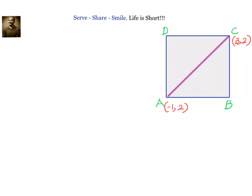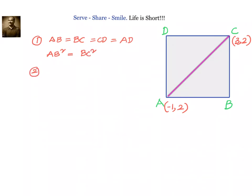First, let's write down the properties of a square so we can apply coordinate geometry concepts to find the two opposite vertices B and D. In a square, all sides are equal: AB = BC = CD = AD. If we square them, they are all equal, so AB² = BC². Second, we know the diagonal of a square is √2 times the side.